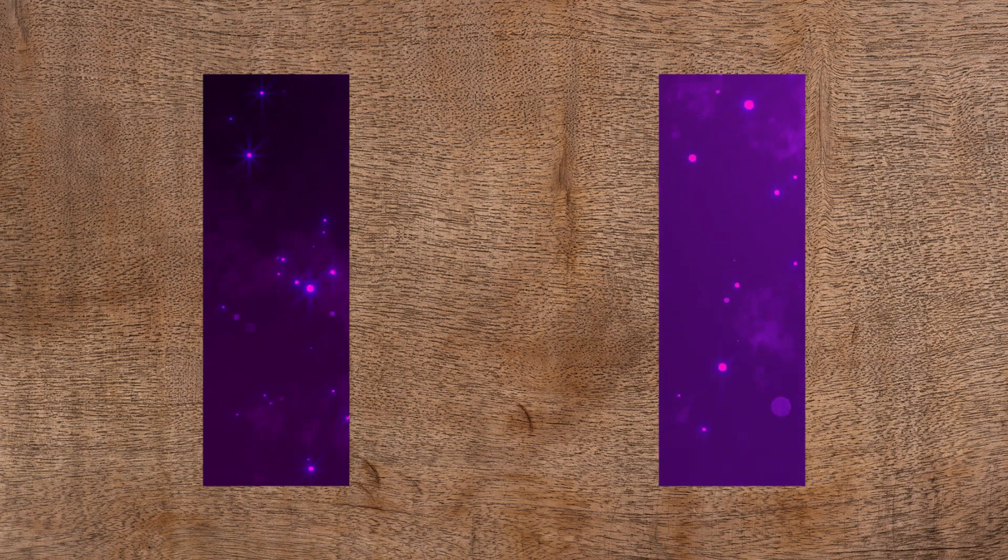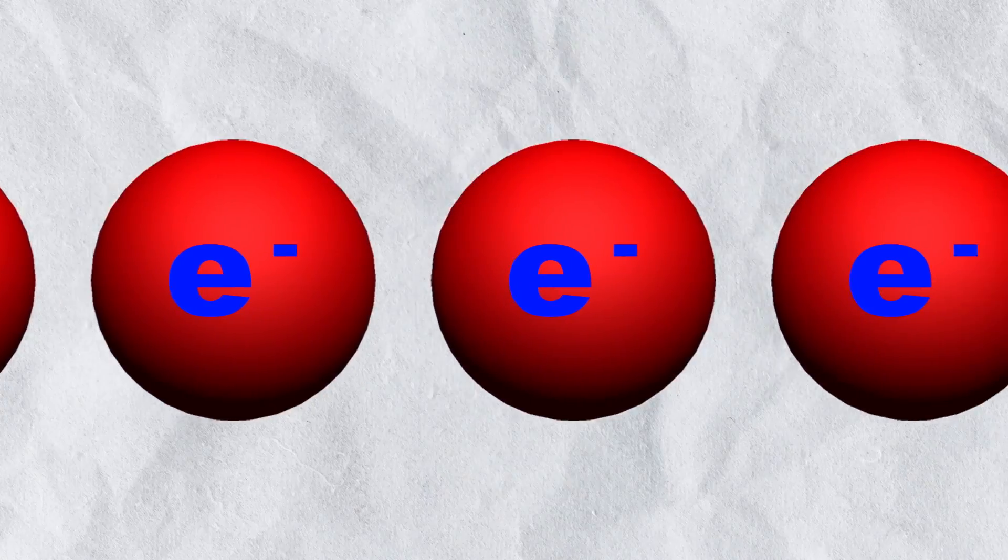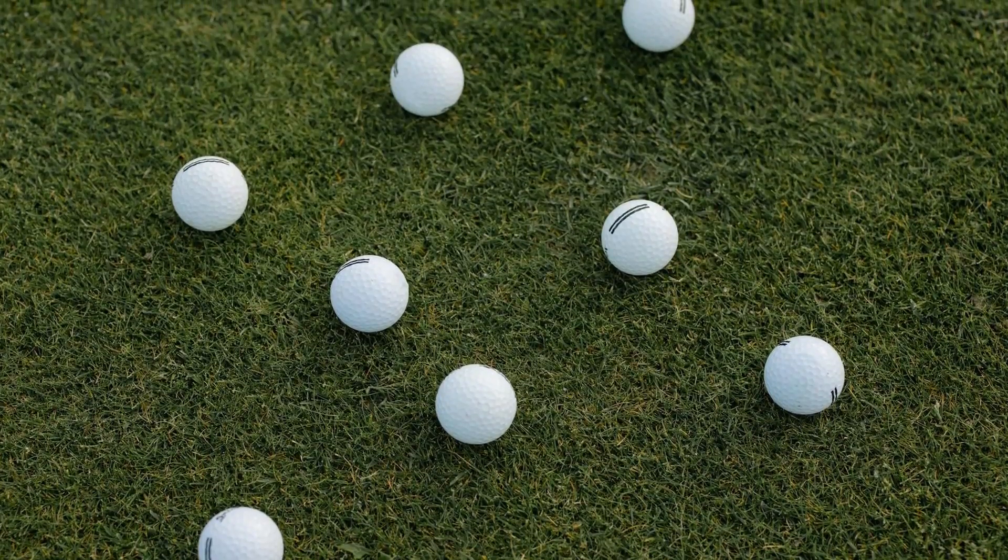If we try the same experiment with electrons and send them one after the other, we will see individual points hitting the wall because they are particles, or are they? If we let this run longer, we will notice a pattern forming.